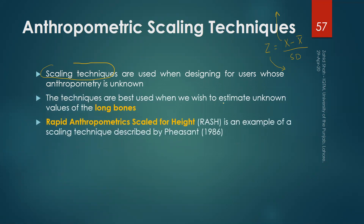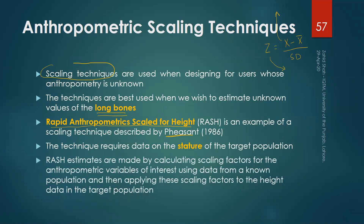These techniques are more suitable to estimate unknown values. One such technique is the Rapid Anthropometric Scale for Height, or RASH, proposed by Stephen Fiesent. This technique is based on the stature or standing height of the target population — the population for which we want to find the value of a certain anthropometric variable. We also need a reference, or known, population. We calculate scaling factors from the known population's data and apply them using height data from the target population, so we do need stature data for the target population.